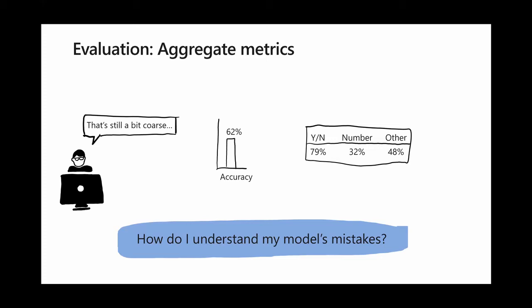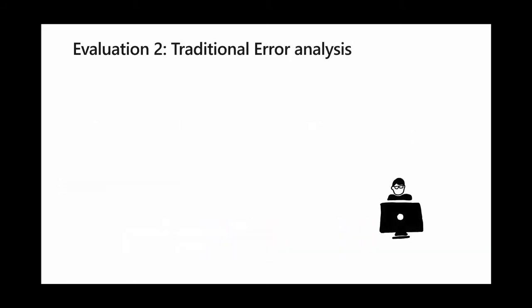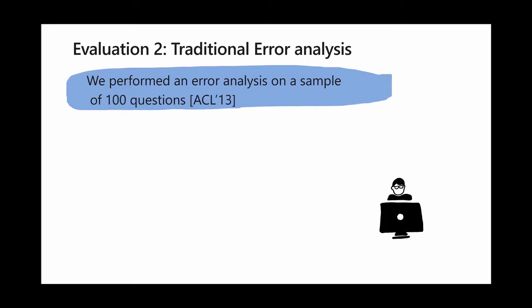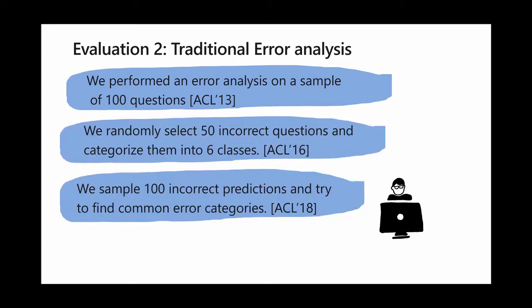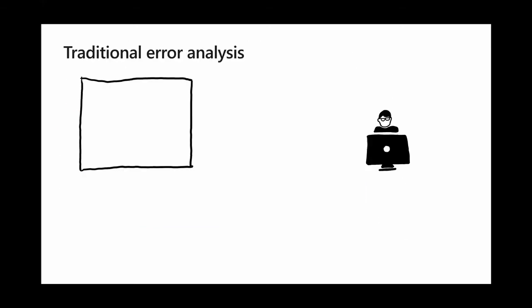So how do you really understand your model's mistakes? When I took an NLP class back in 2012, I learned that what you should be doing is error analysis — you look at a hundred mistakes and try to see if there are any patterns. This happens not only in NLP courses but in a bunch of papers, which is a good practice. People should be looking at incorrect predictions and figuring out what's going on. Between 50 and 100 examples — we surveyed 12 papers and all of them were within this range.